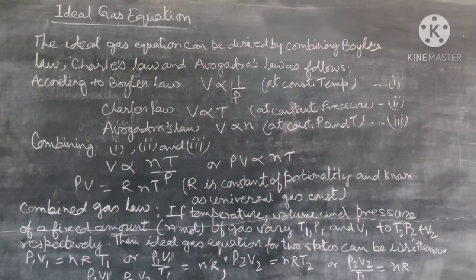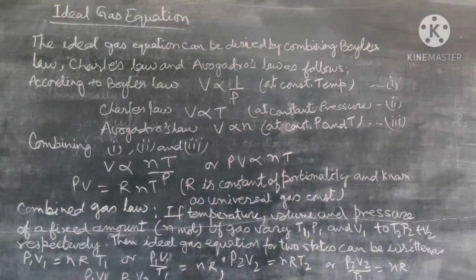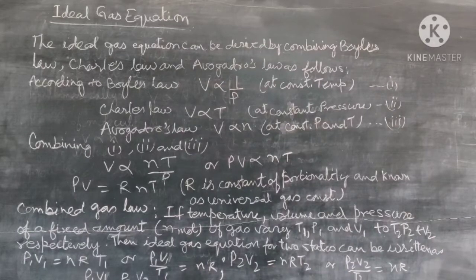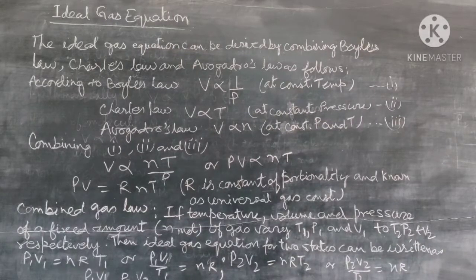Now we derive the ideal gas equation. You have studied Boyle's law, Charles' law, and Avogadro's law, and now we will derive the ideal gas equation. A gas that follows Boyle's law, Charles' law, and Avogadro's law strictly at all conditions is called an ideal gas. It is assumed that intermolecular forces are not present between the molecules of an ideal gas.